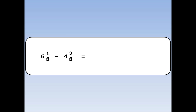6 and 1 eighth take away 4 and 2 eighths. 2 eighths is bigger than 1 eighth, so I'm going to have to borrow. 6 and 1 eighth is exactly the same as 5 and 9 eighths. If I borrow a whole from the 6, it turns into 8 eighths. 8 eighths plus 1 eighth is 9 eighths.